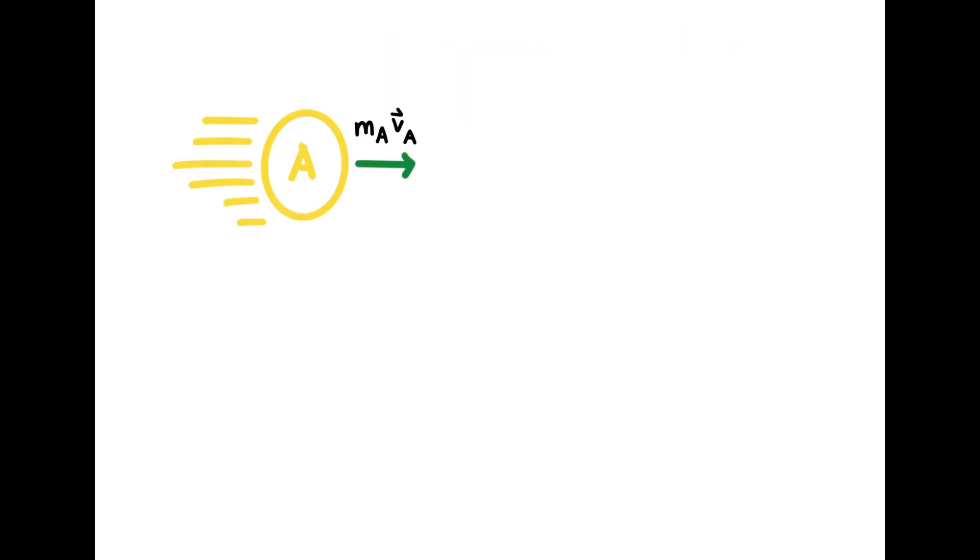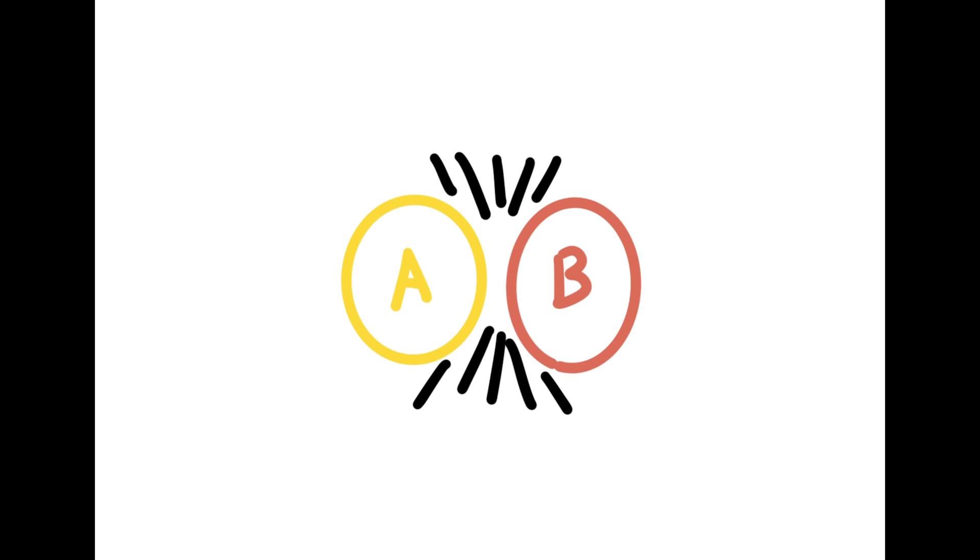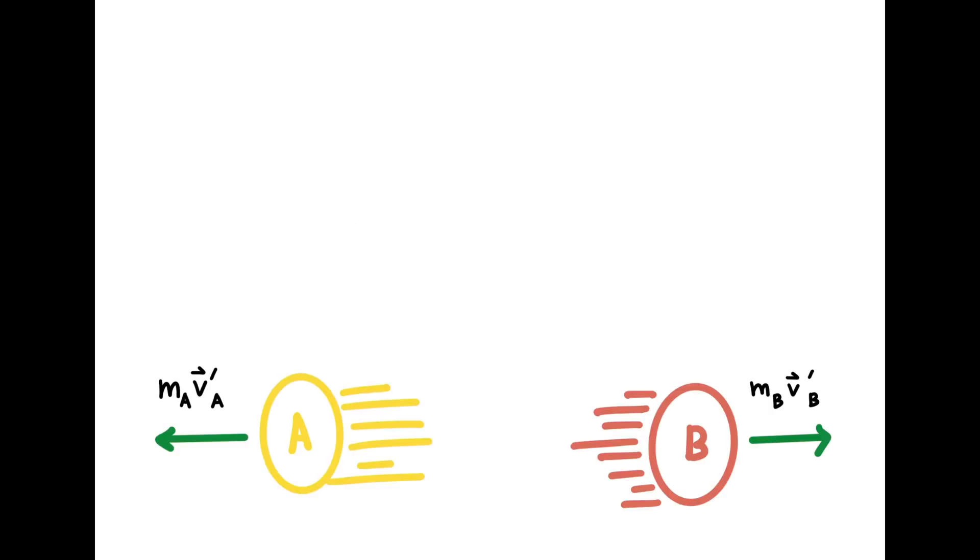In the head-on collision we can take an example of a billiard ball where ball A is moving toward ball B and they collide each other and then they went back with the same momentum. So this is what the law of conservation of momentum is meant to be.